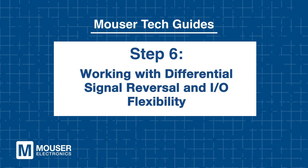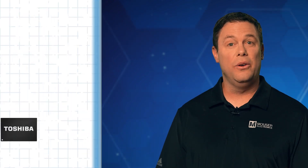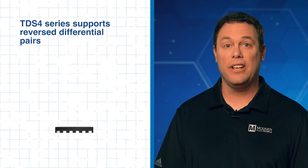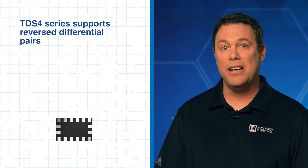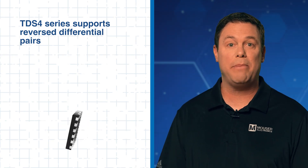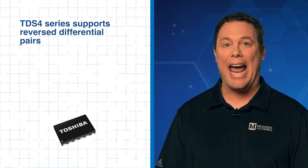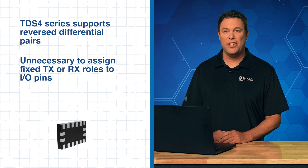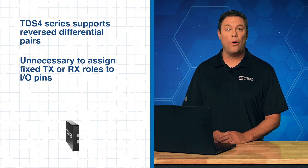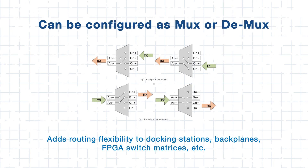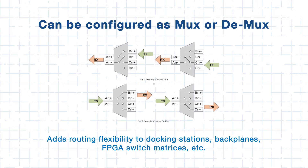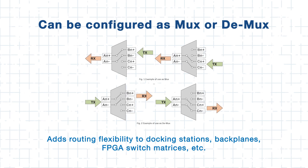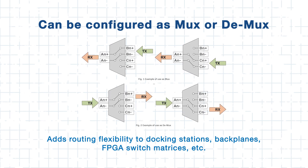Step 6: Working with differential signal reversal and I/O flexibility. In real-world designs, signal routing doesn't always match datasheet labeling. The good news is the TDS4 series supports reverse differential pairs — even if your positive and negative terminals are swapped with respect to the labeling, the switch still functions as expected due to its internal symmetry. Also, because these are passive, bidirectional switches, there's no need to assign fixed TX or RX roles to I/O pins. You can configure them as MUX or DEMUX on the fly, which adds routing flexibility for systems like docking stations, backplanes, or FPGA switch matrices.